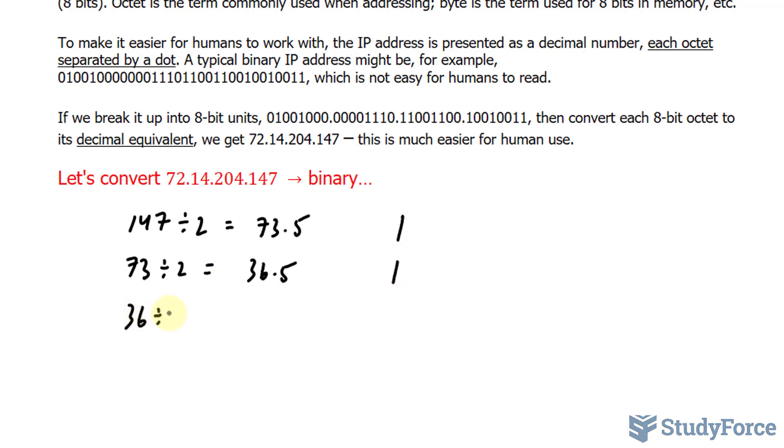We'll take 36, divide that by 2, we end up with 18. 18 is a whole number, there's no decimal, so obviously no remainder. That's read 0. 18 divided by 2 is 9, no remainder, so 0.